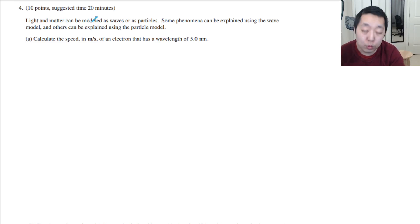So let's take a look here. Light and matter, as usual, if I have any mistakes or if you see anything I did wrong, please comment below. And I will put any corrections in the description. Light and matter can be modeled as waves or particles. Some phenomena can be explained using the wave model and others using the particle model. Calculate the speed in meters per second of an electron that has a wavelength of 5 nanometers.